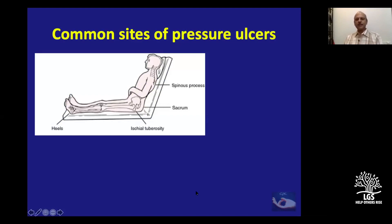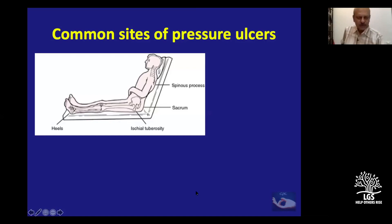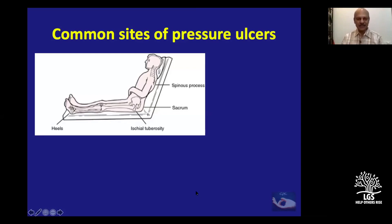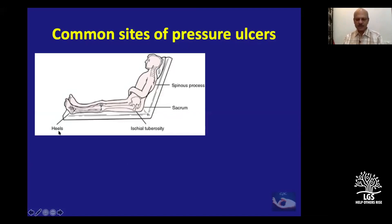You get pressure ulcers from different positions of rest. When the patient is sitting up with 90-degree head-end elevation — one of the most common irritant factors — the patient is made to sit up and sags down in bed. That is one of the most uncomfortable positions and one of the commonest reasons why pressure sores develop. When the patient is in that position, the main force is on the ischial tuberosity and the sacrum.